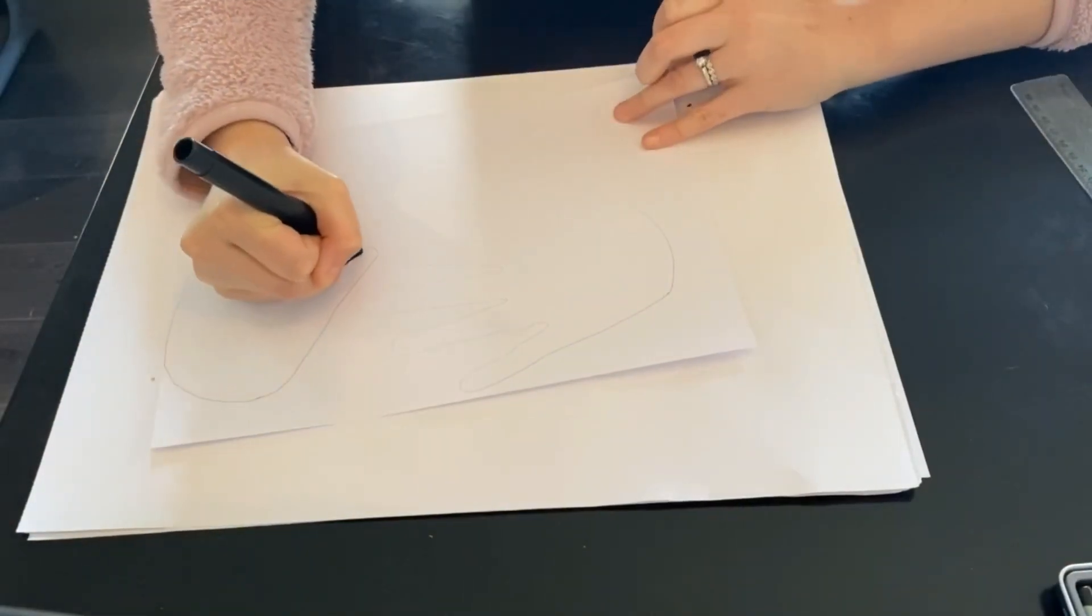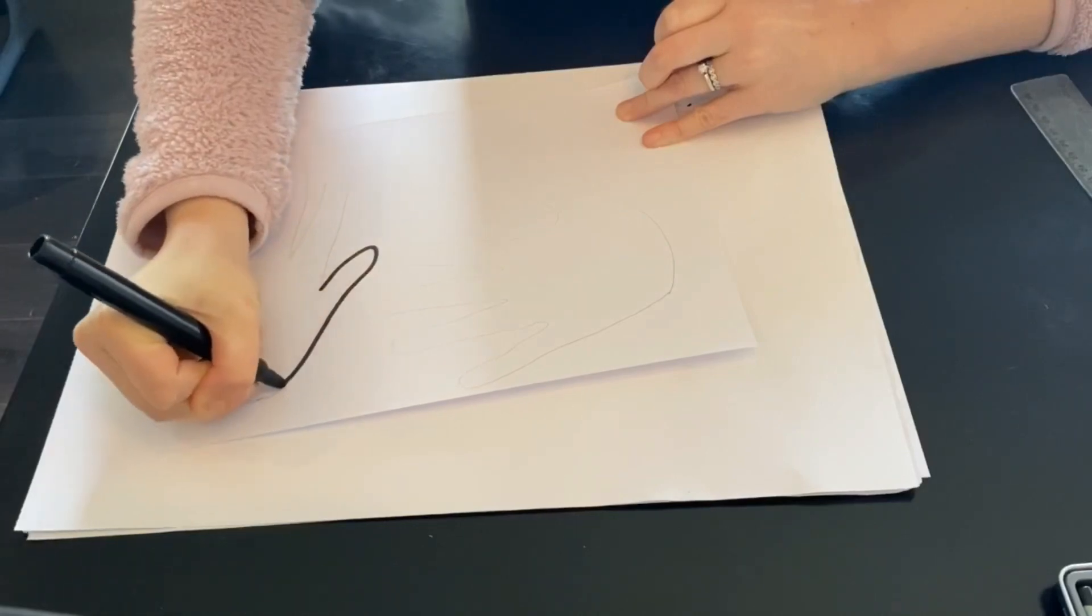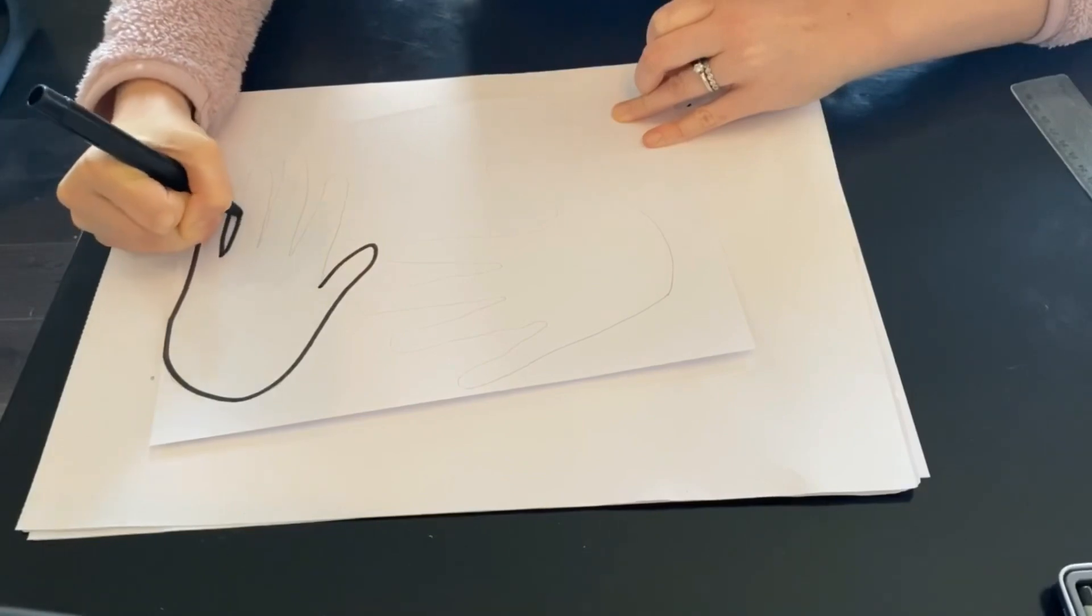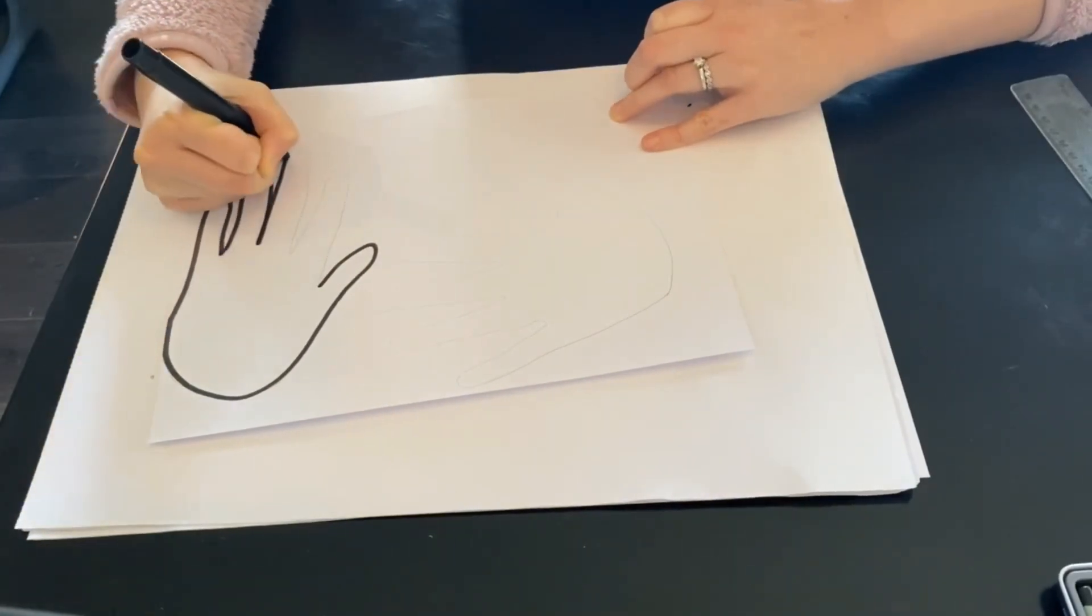Now using a black marker, you're going to trace over the top of all of your gray lead lines nice and carefully, so that you've gone all the way around both hands with your black marker.